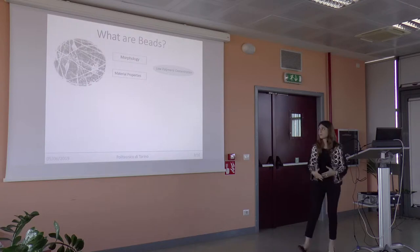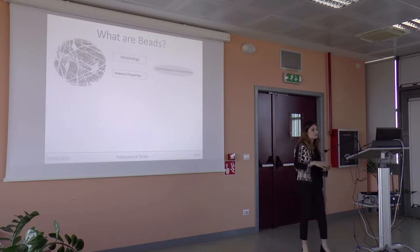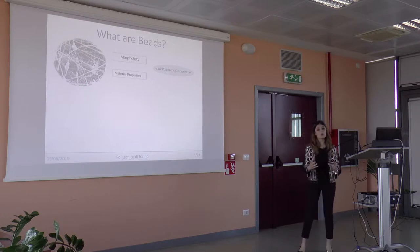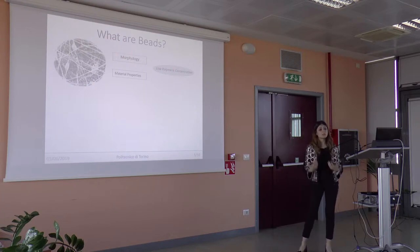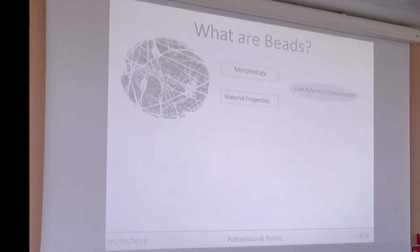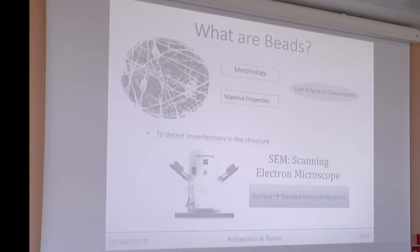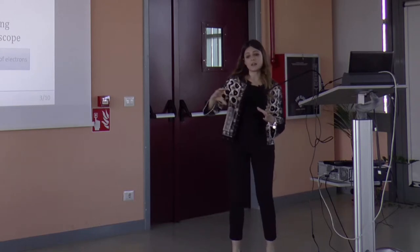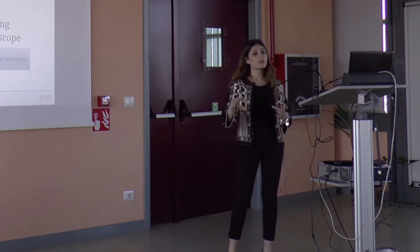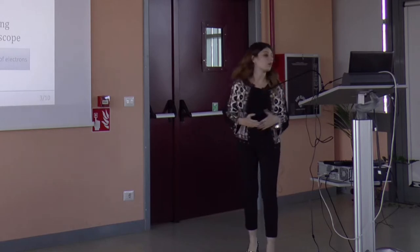But what is a bead? Beads are nano-aggregates of nanomaterial that alter the morphology and properties of the material, and this is caused by low polymeric concentration of the solution. The most common method to detect imperfections in the structure of nanomaterials is the scanning electron microscope, which is based on scanning the material surface with a focused beam of electrons.